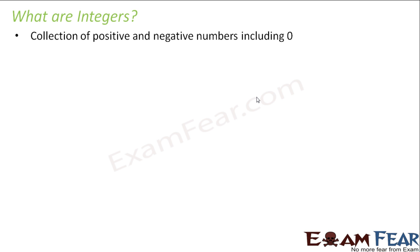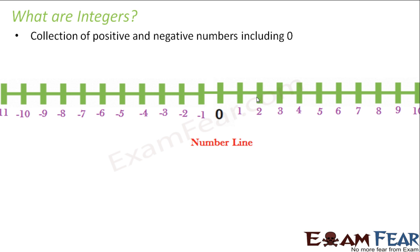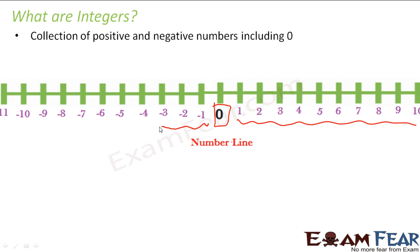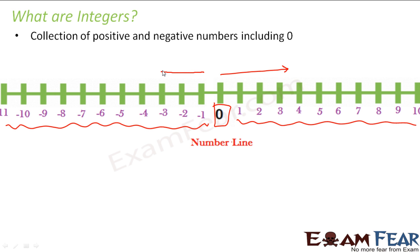To sum it up, when we talk about integers, we talk about all the natural numbers like 1 to infinity. We also talk about zero — that way we include all the whole numbers — and at the same time we also include all the negative numbers. When we represent all of these on a line, which makes the number line, this is how it looks: you have zero at the center, on the right side you have all the series of positive numbers, and on the left side of zero you have all the negative numbers.